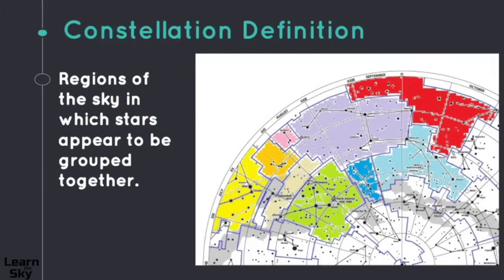Just to review, a constellation are regions of the sky in which stars appear to be grouped together. Constellations really are man-made objects and it's something that we have been using over thousands of years to help us measure time.